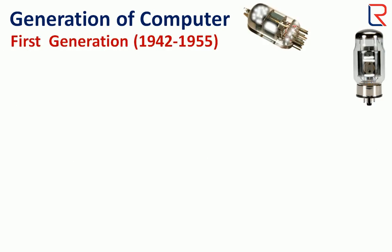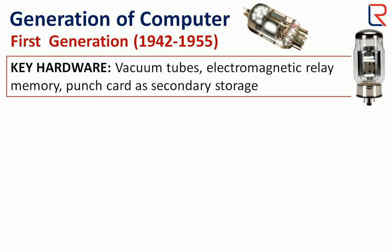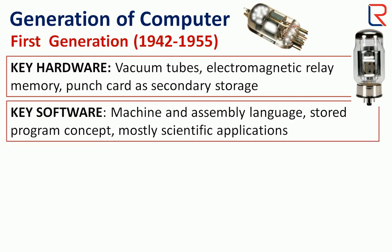Let's start with the first generation. The period is 1942 to 1955. The key hardware are: vacuum tubes were used as the main part of the computer, electromagnetic relay memory, and punch card as secondary storage.